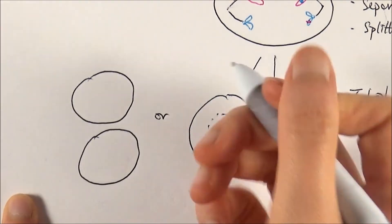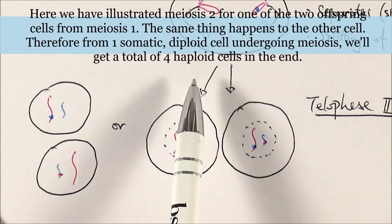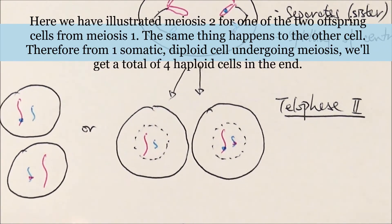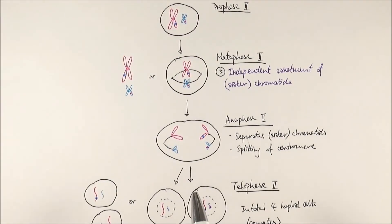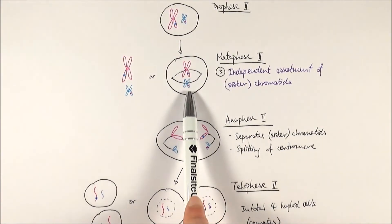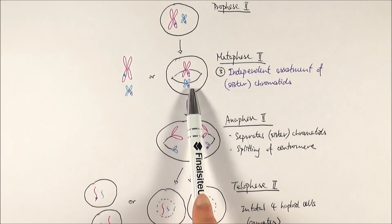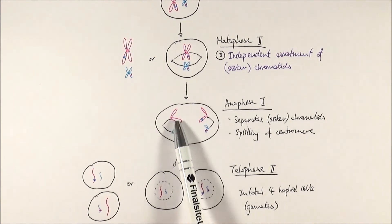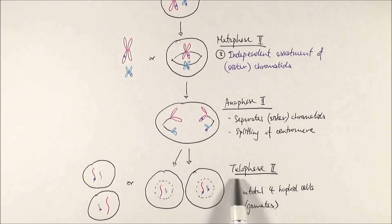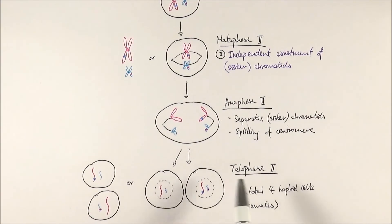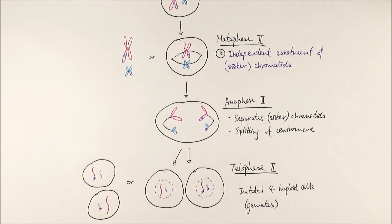In telophase two, the nuclear envelope reforms and the DNA relaxes and becomes invisible again. From one cell from meiosis one we got two cells, and the same process happens for the other cell, so in the end we get four haploid cells in total — and these are now gametes. To summarise meiosis two: in prophase two the nuclear envelope disappears and the DNA condenses; in metaphase two chromosomes line up along the middle with independent assortment of the chromatids; in anaphase two the sister chromatids separate via spindle fibers and the centromere splits; in telophase two we get daughter cells that are all genetically different from one another. From meiosis one and two combined, we get a total of four haploid gametes — all genetically different — and that is meiosis.